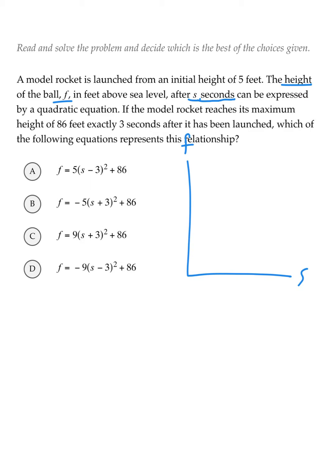The question already tells us that the rocket is launched from an initial height of 5 feet, which means it's already starting at 5 feet even before being launched. No seconds have passed. It's already at 5 feet.